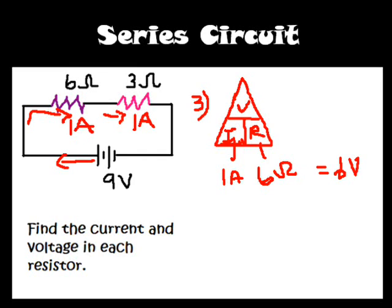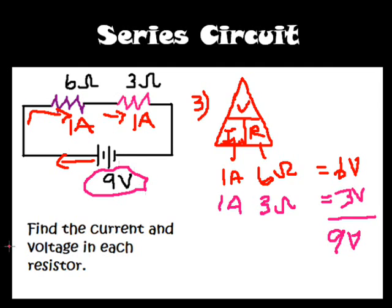So again, if we apply this to the second resistor, we know the current stays the same. But in this one our resistance is 3 ohms. So our voltage drop for the second resistor is 3 volts. How do we know we did this correctly? Because when we add these together we get 9 volts, which is equal to the total voltage coming from the battery.